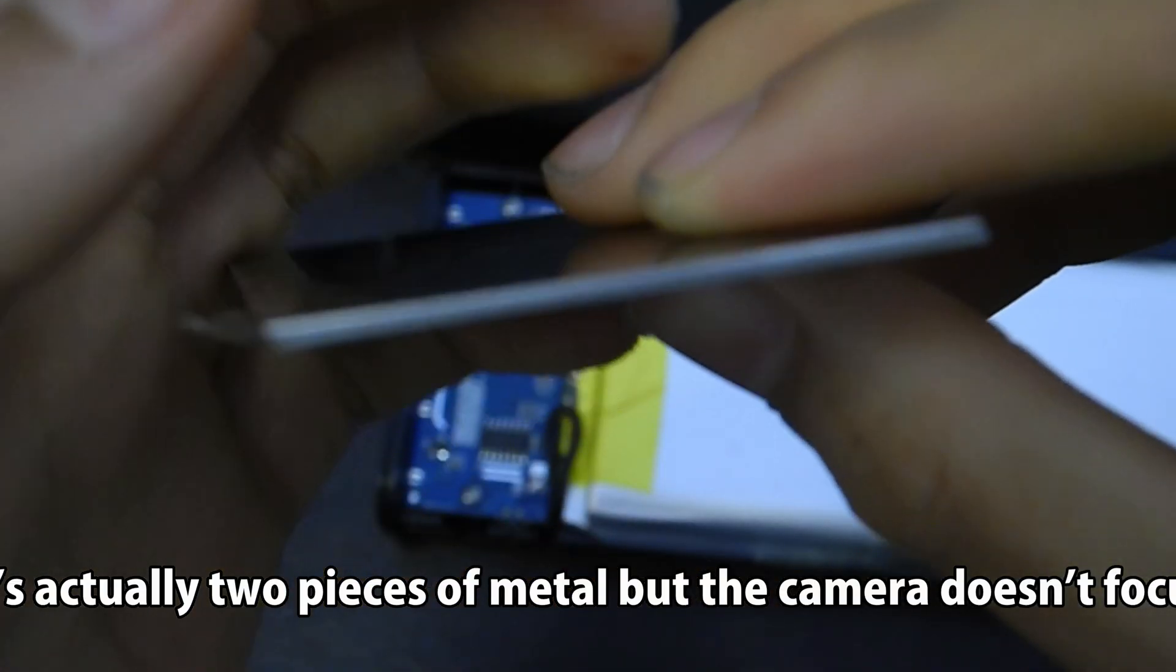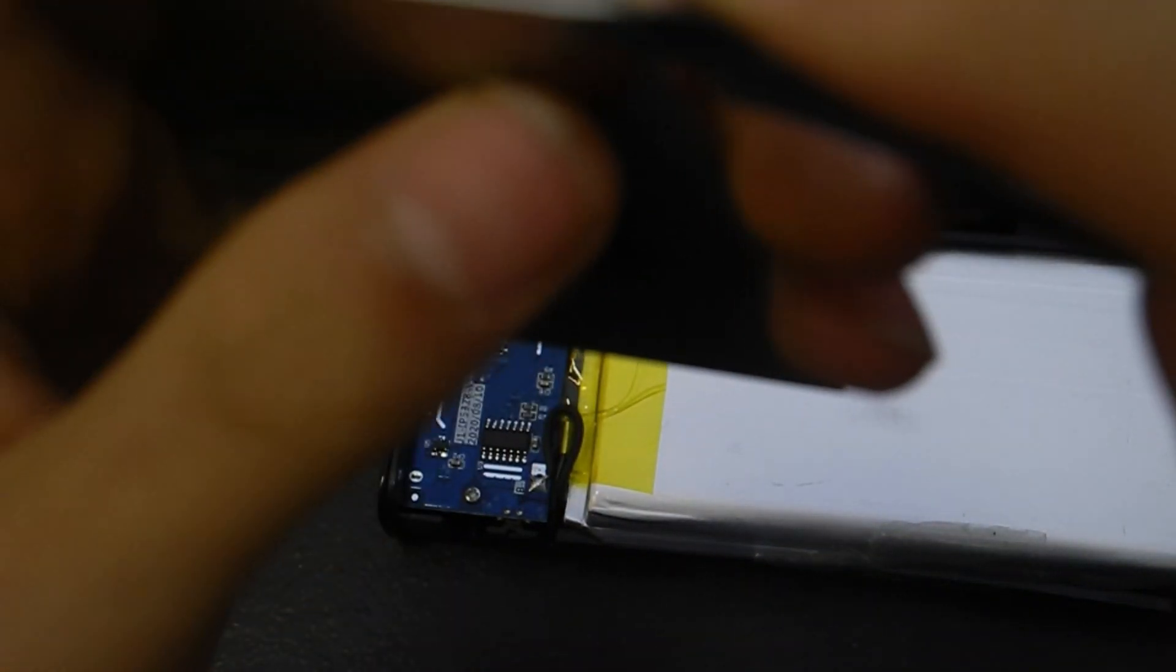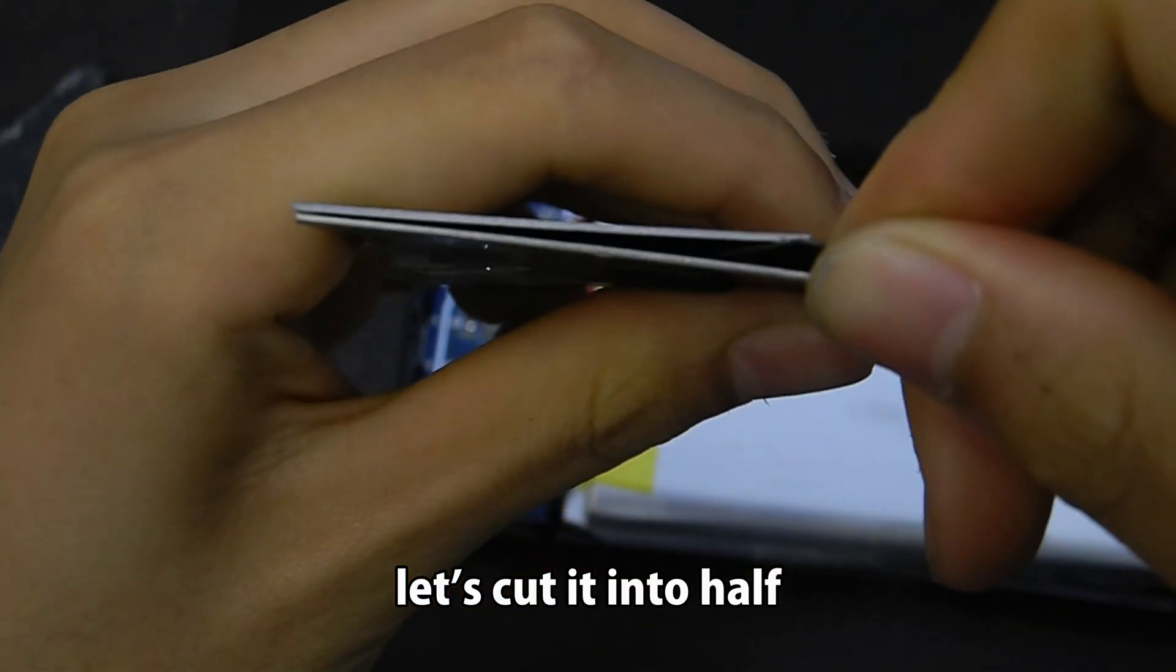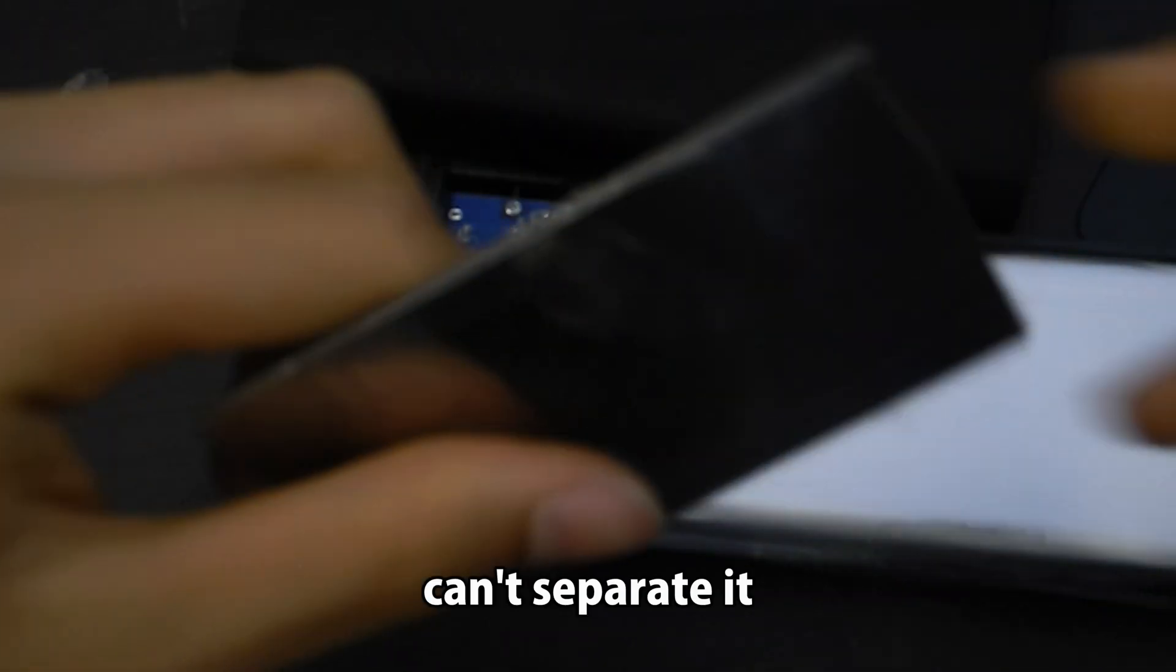Now the metal sheets come off. It's actually two pieces of metal but the camera doesn't focus. Let's cut it into half. It's probably glued. Can't separate it.